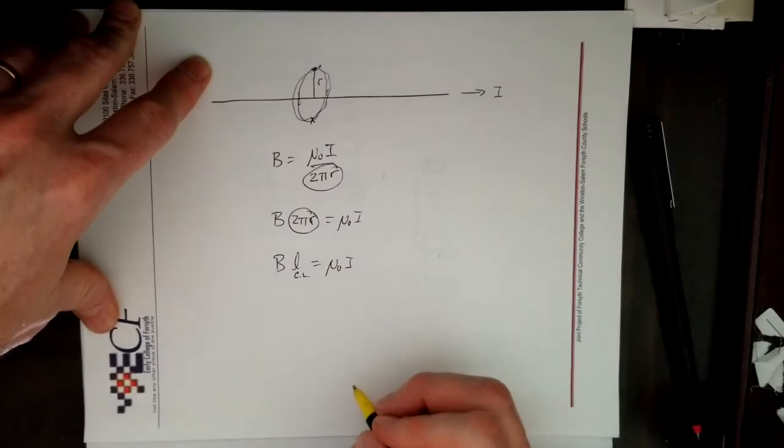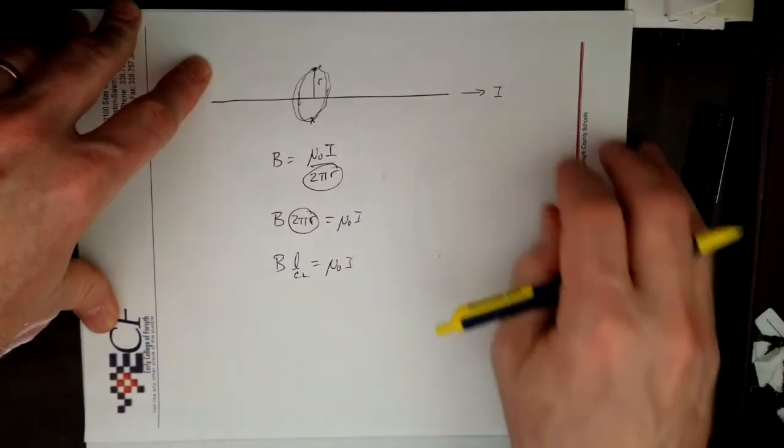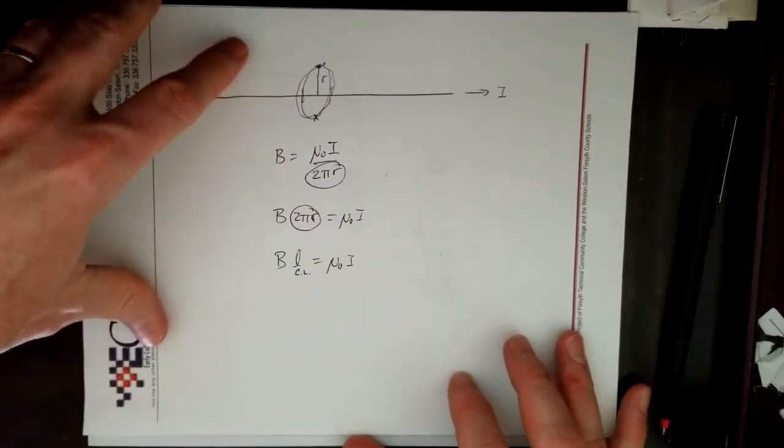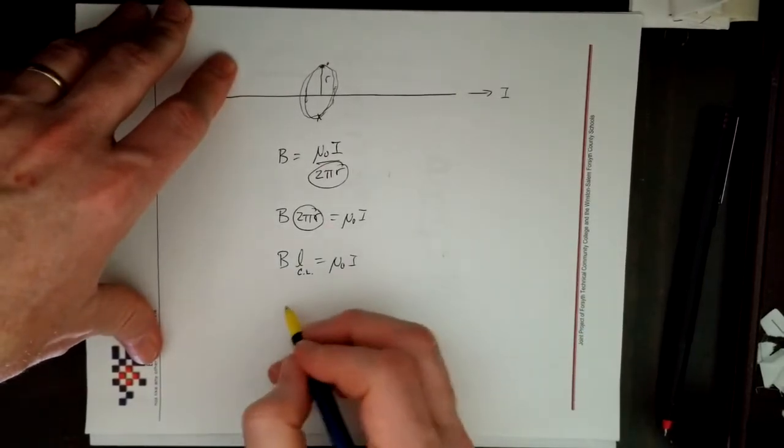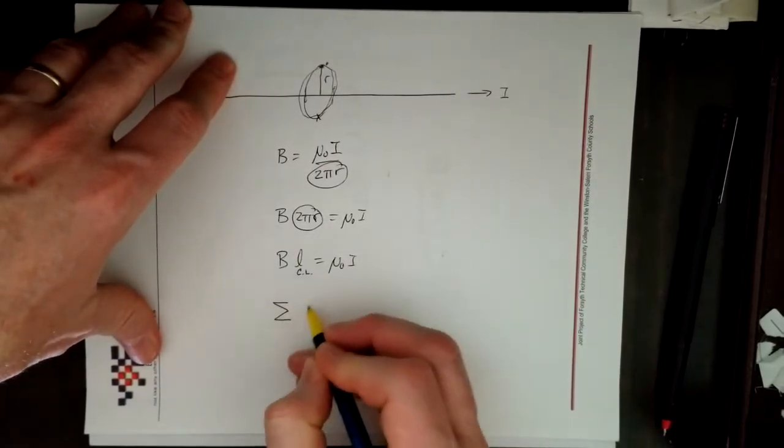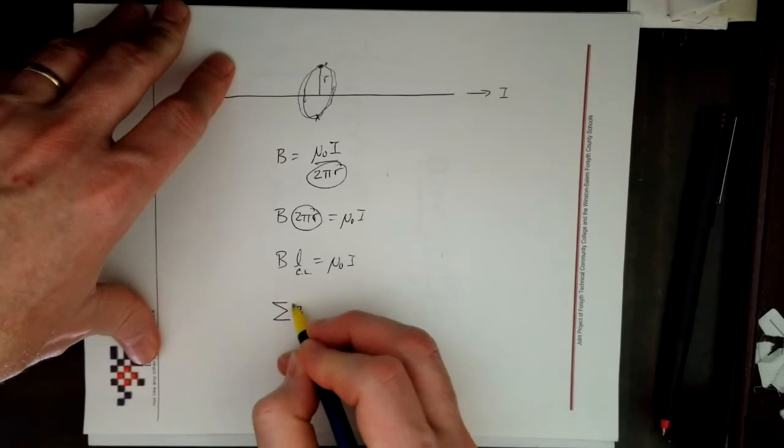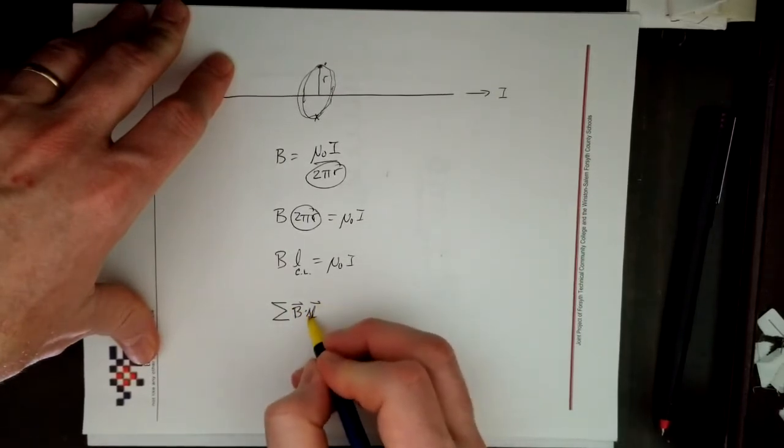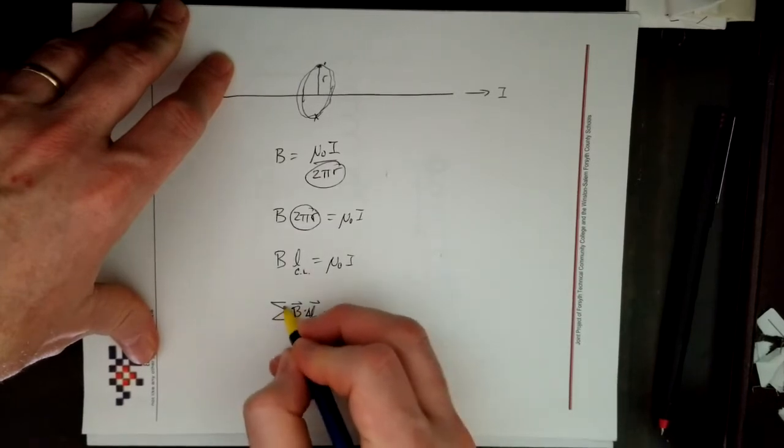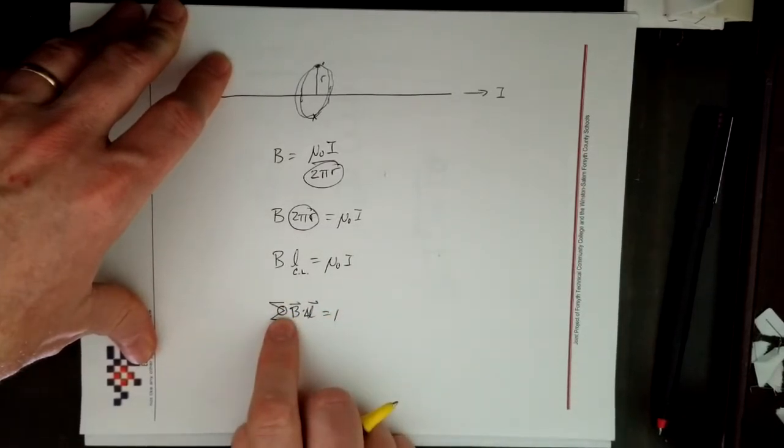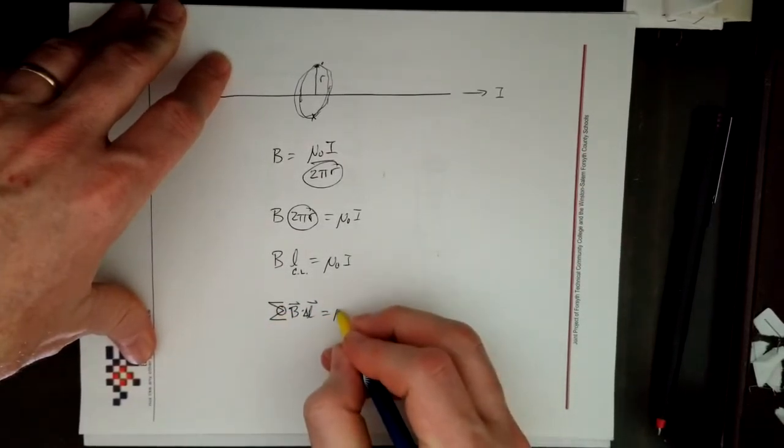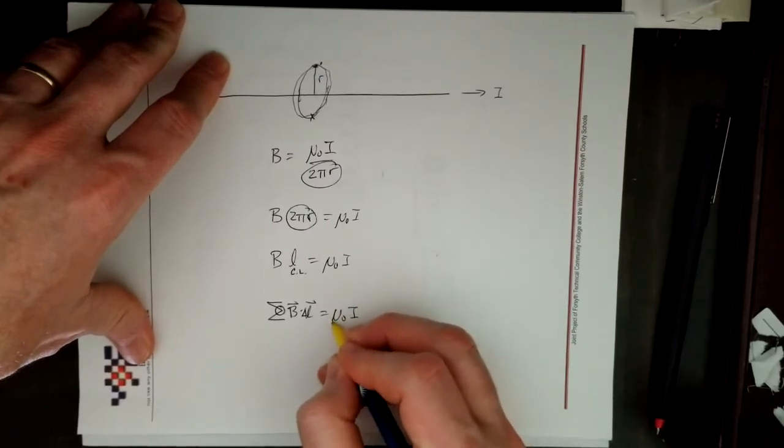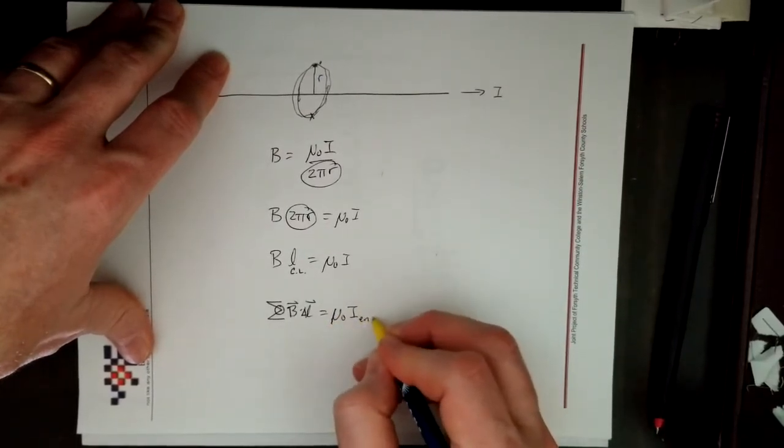Remember we had closed surface dealing with Gauss's law, but this is not Gauss's law, this is a closed loop. And so we can do the sum for 152, the sum of all the b dot l's. That's b dot delta l, and that is to indicate that it is a closed loop. It is equal to mu naught i, and this current right here is the enclosed current.